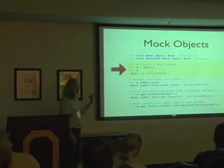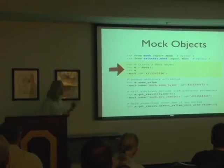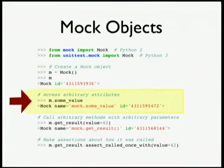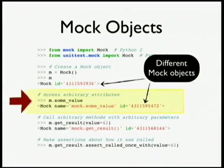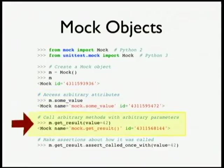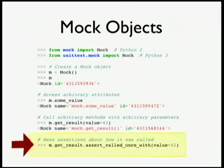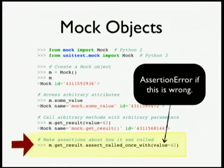Once you've got mock, you can create a mock instance. You can inspect it and see that you have a mock with a particular ID. Then I can access some arbitrary variable — notice what happens: I get a different mock object, a totally brand new instance. Then I can call a method with arbitrary parameters and it gives me yet another mock instance. And then I can assert that it was called once with this input. If my code called this differently, it would raise an assertion error.